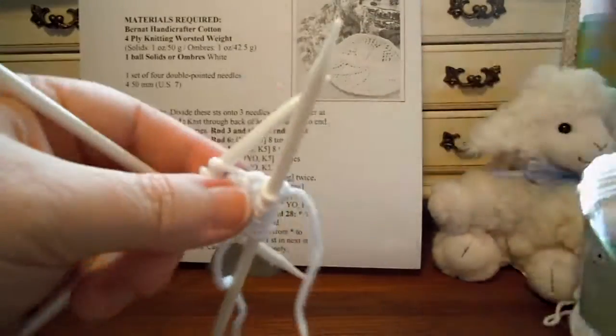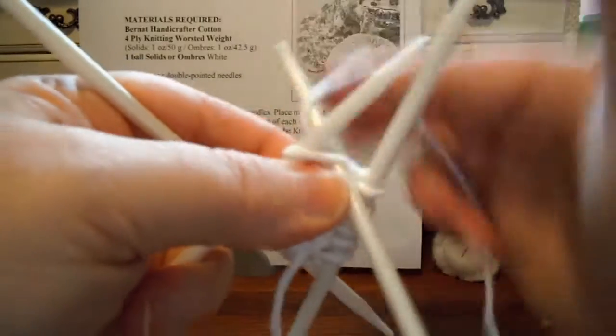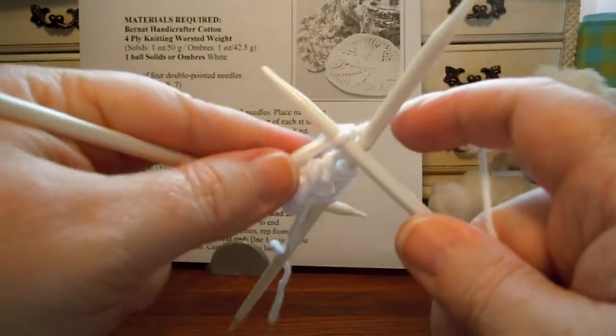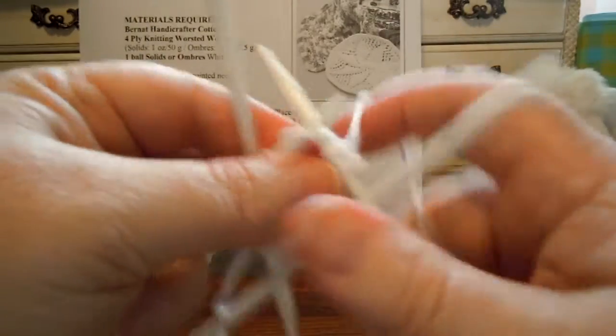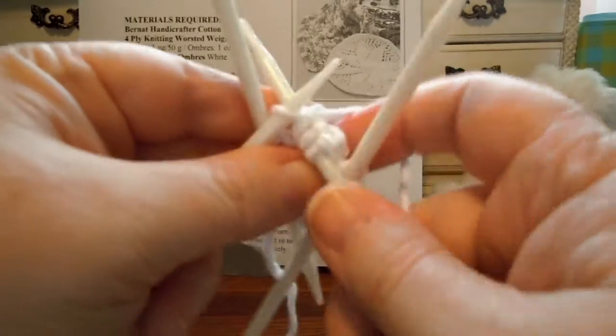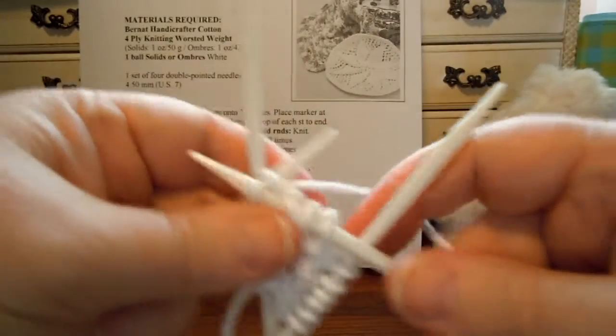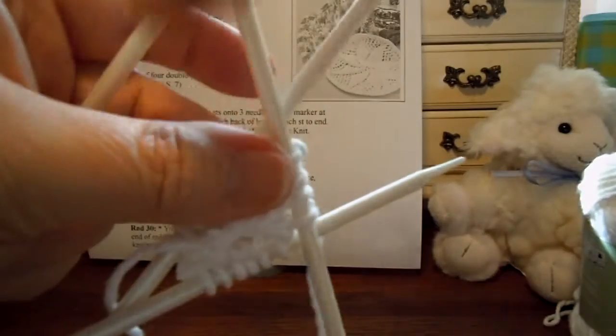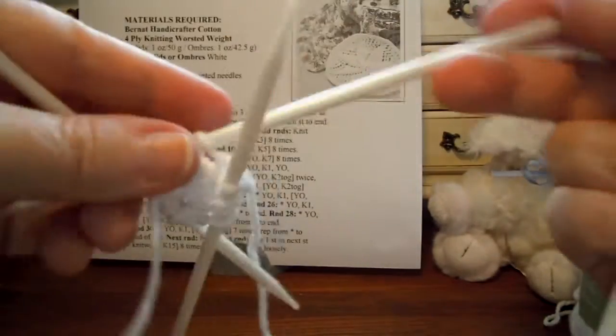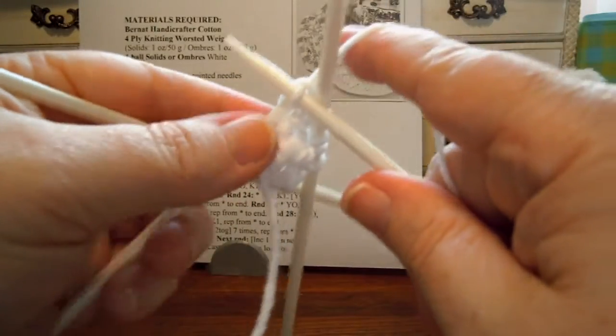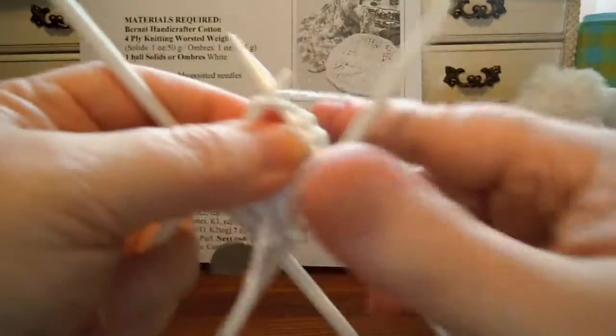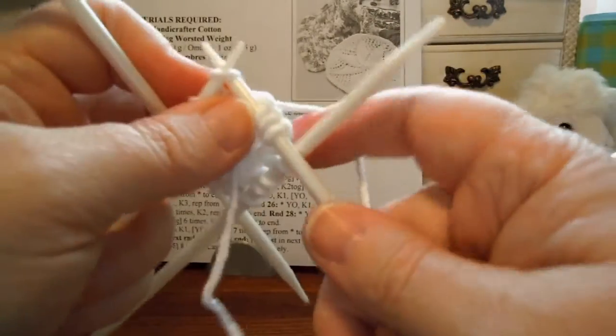And when you switch to the next needle, pull that first stitch kind of snug here. And it'll keep you from having, I can't even remember what they call that. I used to know it like it was nobody's business, but I can't remember right now. You have spaces in there that stand out in your design. So try to pull it snug for the first stitch or two. Ladders. That's what they call it. You get ladders. That'll help you to avoid getting ladders.